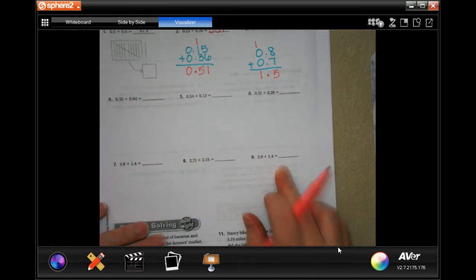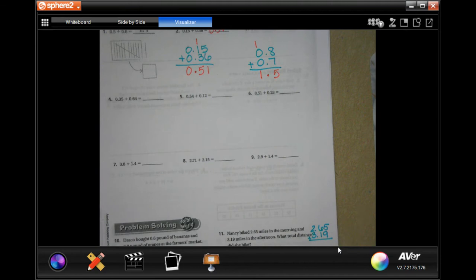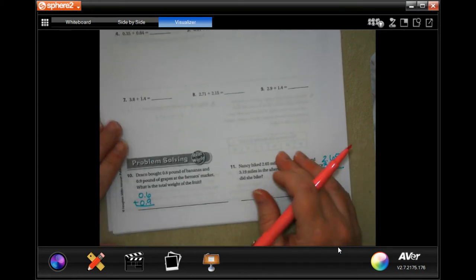You guys do four through nine. It's exactly the same. Line up your decimal, bring your decimal down, then do your adding. Very easy, guys.